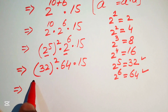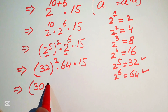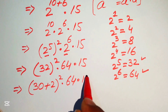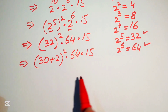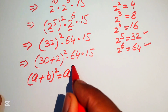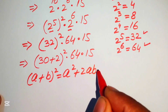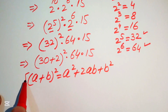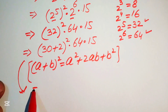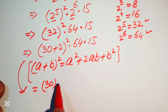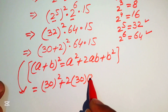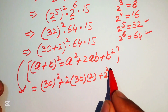Now we focus on 32. We break 32 as 30 plus 2, so we have (30 plus 2) squared, multiplied by 64, multiplied by 15. We apply the algebraic formula: (a + b)² equals a² plus 2ab plus b². Expanding, we get 30 squared plus 2 times 30 times 2 plus 2 squared, all multiplied by 64 and 15.